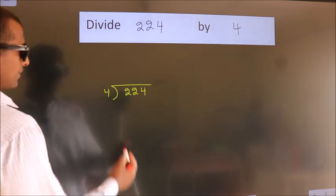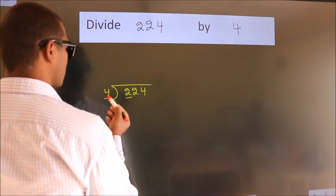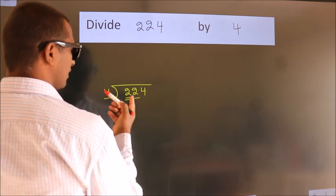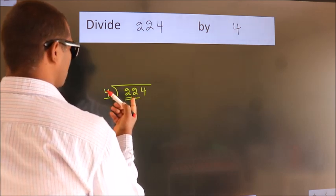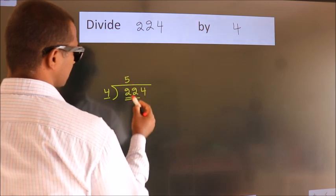Next, here we have 2 and here 4. 2 is smaller than 4, so we should take 2 numbers: 22. A number close to 22 in the 4 table is 4 times 5 equals 20.